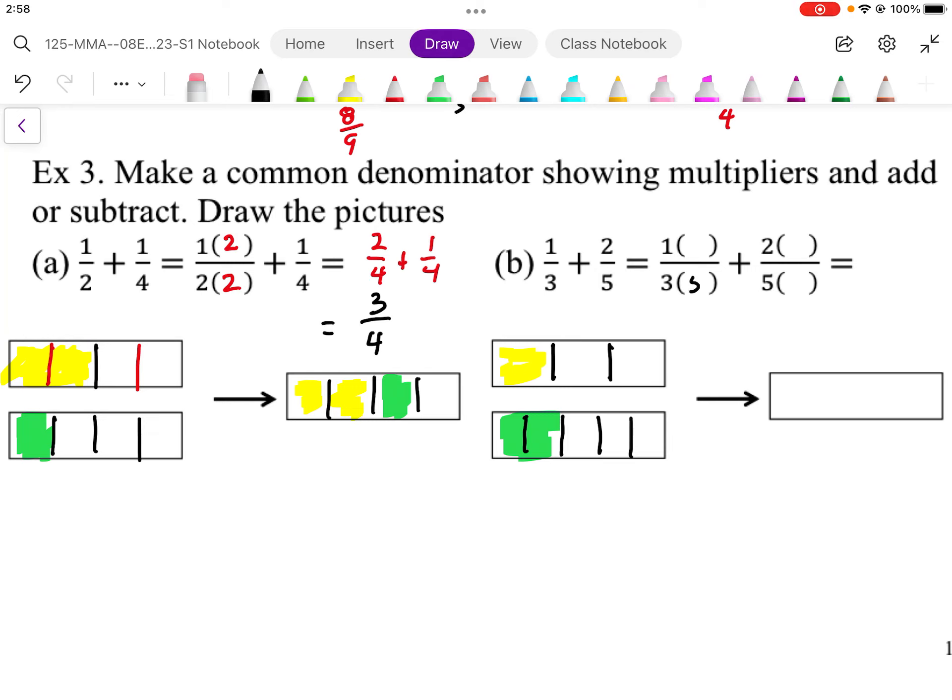To do that, I'm going to multiply the 3 by 5 and I have to do the same to the top. And I'm going to end up with 5 over 15. So this is going to be 5 parts shaded out of 15 parts whole.